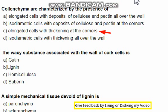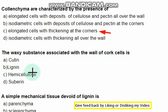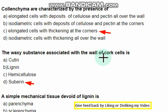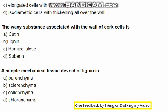The waxy substance associated with the wall of cork cells is cutan, lignin, hemicellulose, or suberin — the right option is suberin. It is the waxy substance associated with the wall of cork cells.